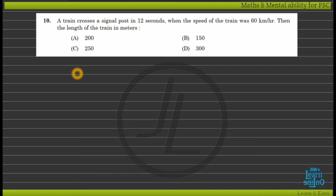We have discussed all types of train crossing problems. The speed of the train is 60 km per hour and the train length is required. We need to check the speed and time.